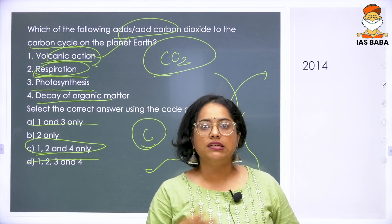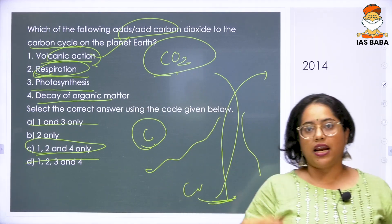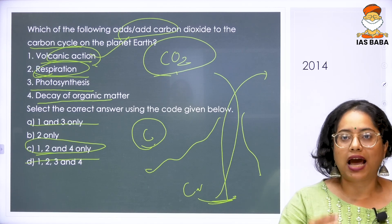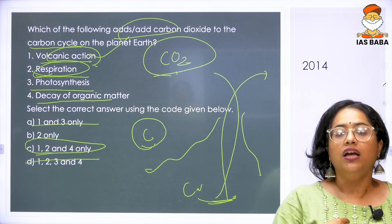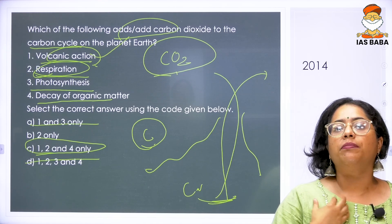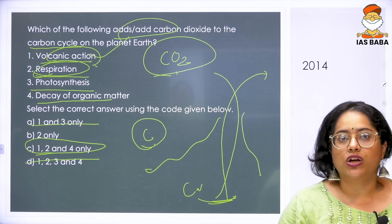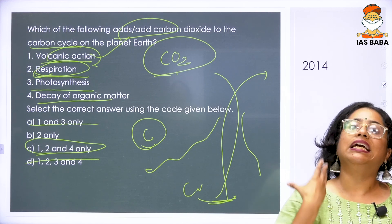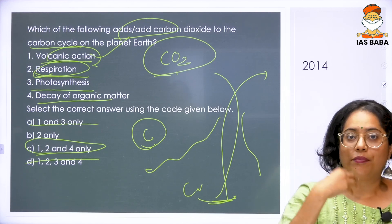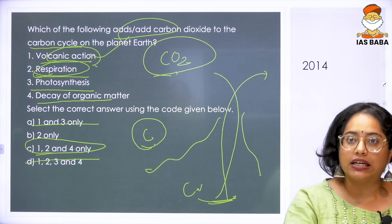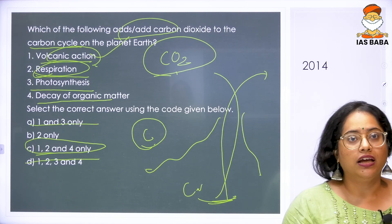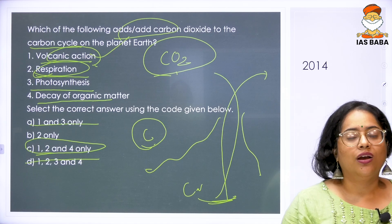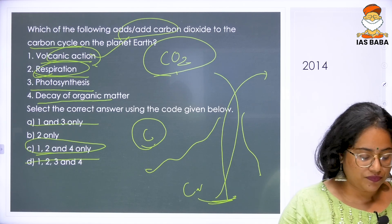Even when organic matter decays — when there are dead and decaying humans, animals, and everything — the carbon in our body gets mixed with the soil, and carbon dioxide is also released into the earth. So your answer is C: 1, 2, and 4.